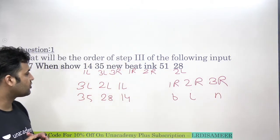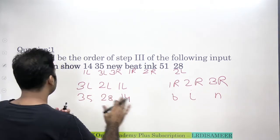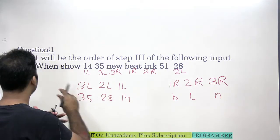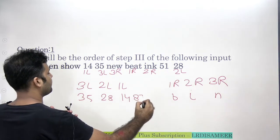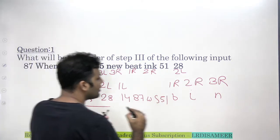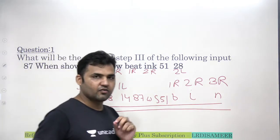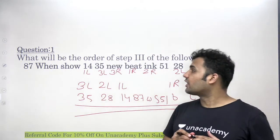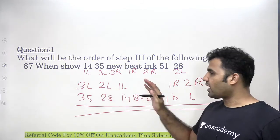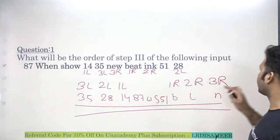The remaining elements are not supposed to be arranged, so write them as they are in the same order as in the initial step. That gives us 87 here, and 51 and 'when' and 'show' in between. This is the order of step 3, and you can write it down in one single line without writing step 1 and step 2 first. That's the answer to the question.